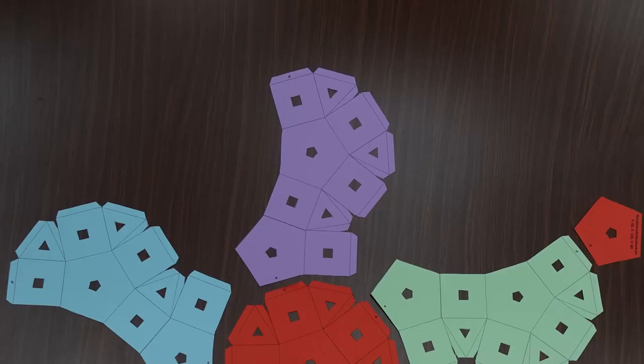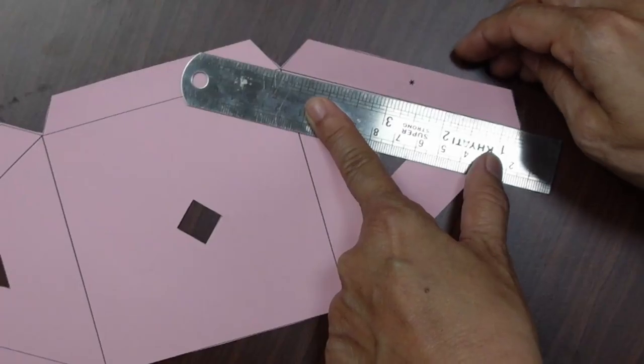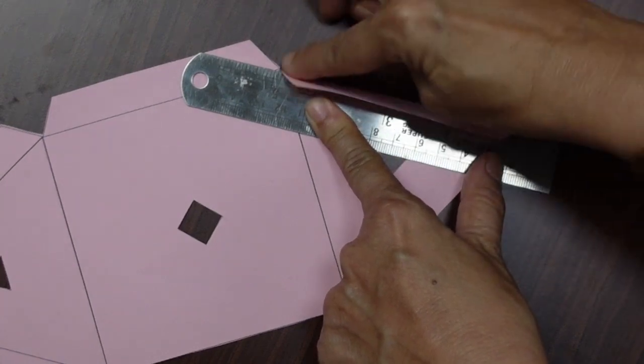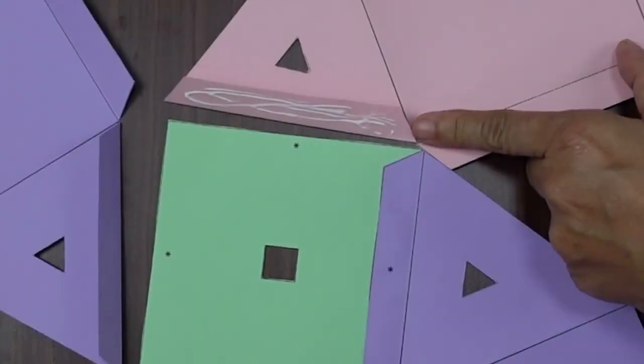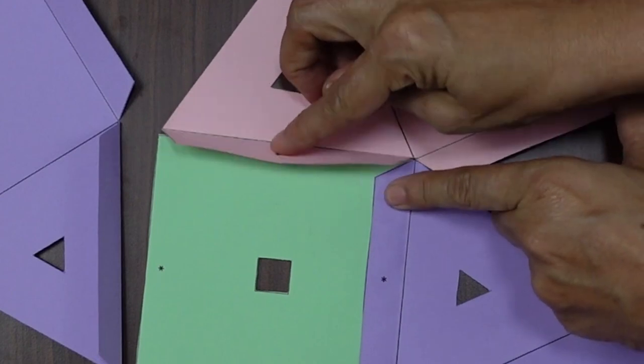After cutting with scissors you will get such cutouts. Fold all the lines inside the cutout with the scale.